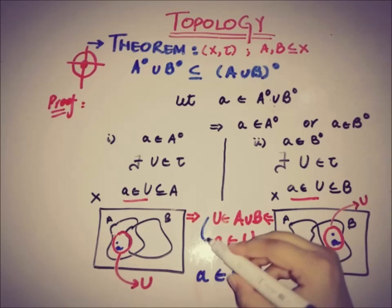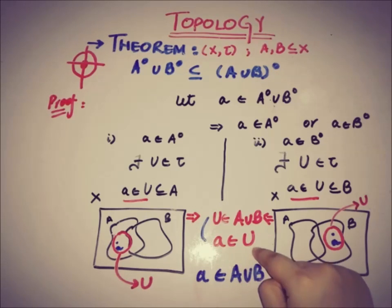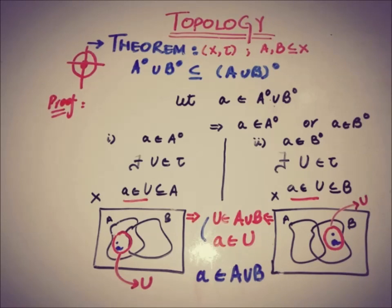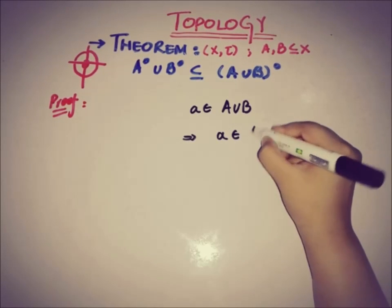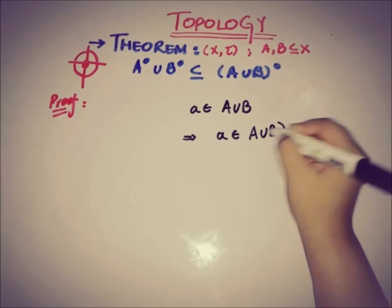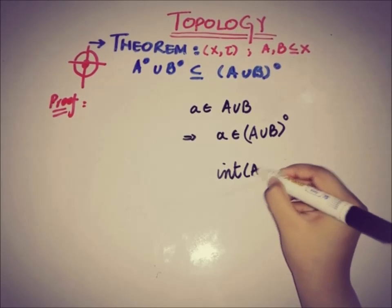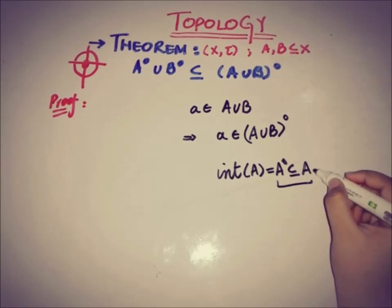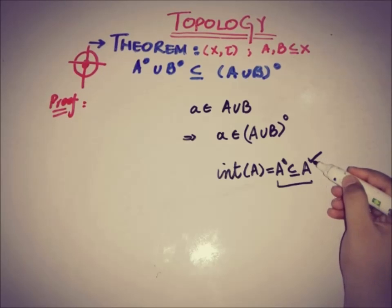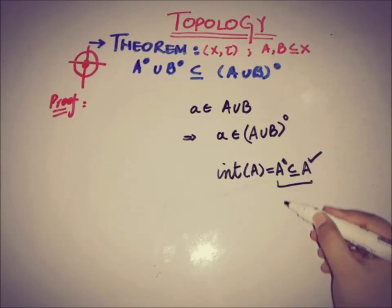By using both of this information, we can say that a is also a member of (A∪B). If a is a member of (A∪B), then a is also a member of (A∪B)-interior. Because we know that the interior of any set — that is A-dot — is a subset of that set. So if a belongs to that set and the interior is a subset of that set, then a would also be a member of the interior.